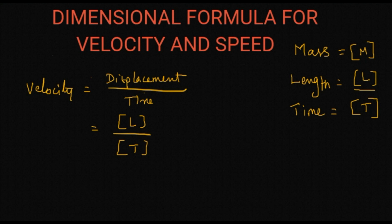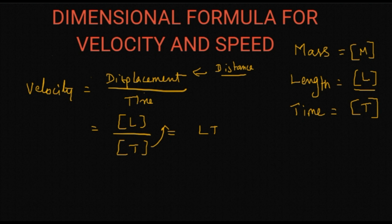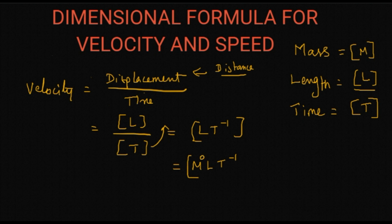The only difference between speed and velocity is that instead of displacement, we use distance for speed. Distance is also measured in terms of length, so it has the same dimension. Bringing time to the top gives L T power minus 1, or including M: M power 0, L power 1, T power minus 1. That is the dimension formula for velocity or speed.